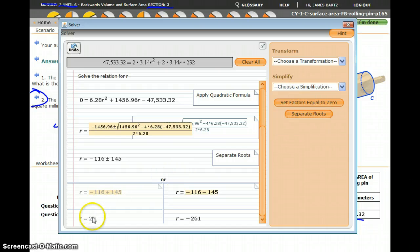Now the fact that we get a positive answer and a negative answer, dealing with a radius, we want the positive radius of 29.